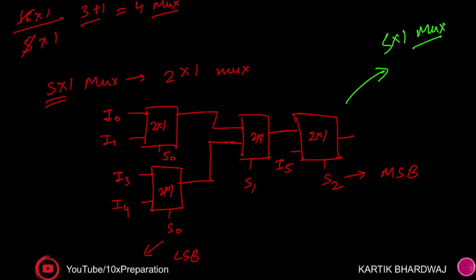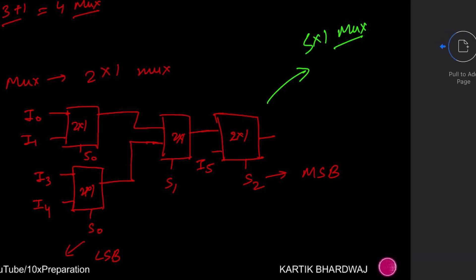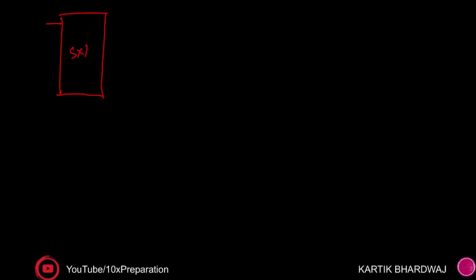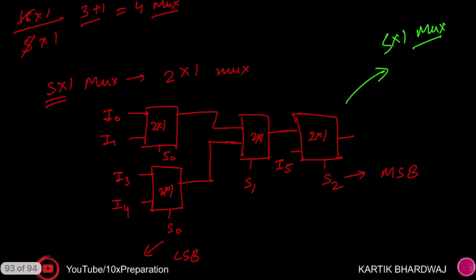So if you see, this circuit is going to be used as a 5x1 MUX, and it is formed by making use of 2x1 MUXes. Now I am going to put this entire circuit inside a box. This is my 5x1 MUX — the entire structure has 5 inputs, 1 output, and 3 select lines: s2 (MSB), s1, and s0 (LSB). Inputs are i0, i1, i2, i3, i4 and output is Y.